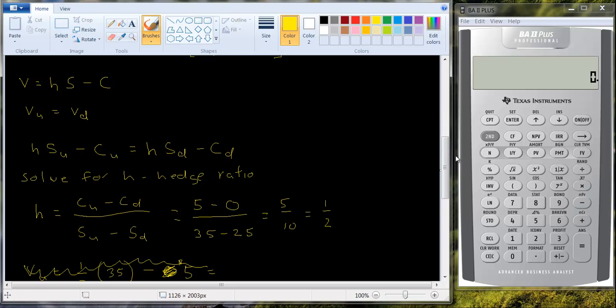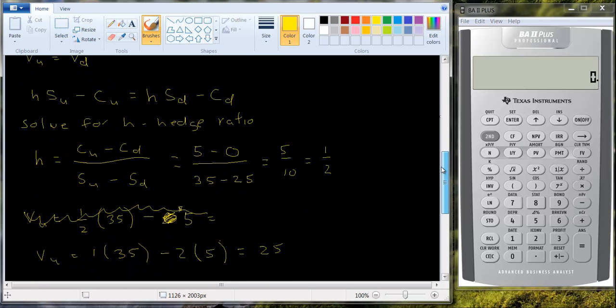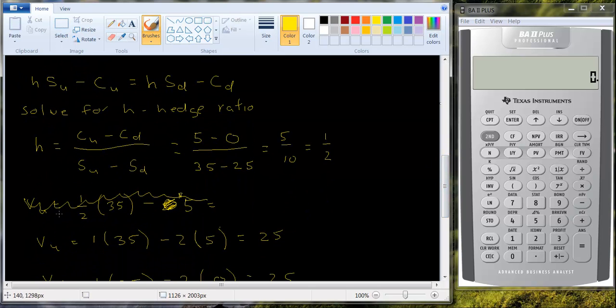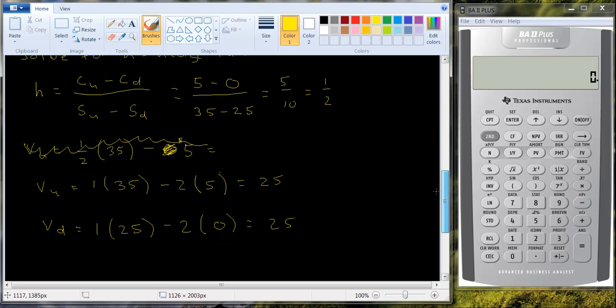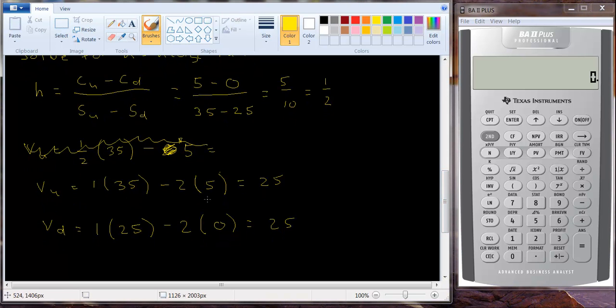Now you don't want to do halves and in fact I sort of forgot what I was doing when I started this example using the same board that I had before. What you want to do is do a two to one ratio. So buy one share of stock and write two call options. It makes it whole numbers, right, you can't buy a half share stock anyhow. And we showed at the end of the tutorial that you got the same value for the portfolio. So it's a riskless portfolio.